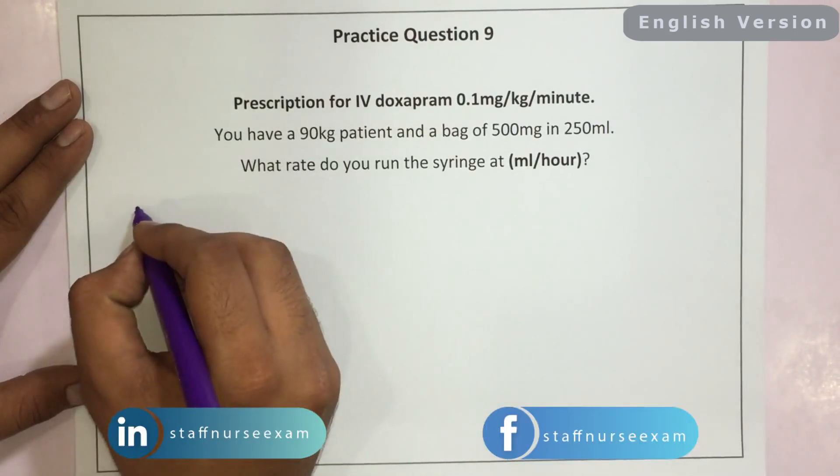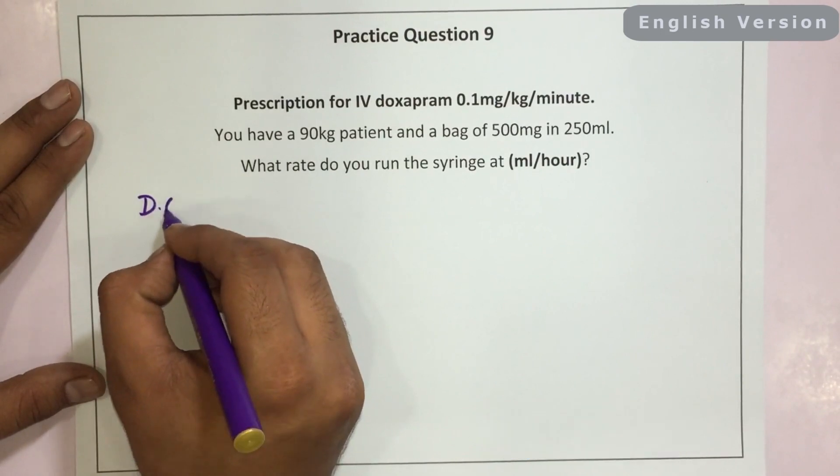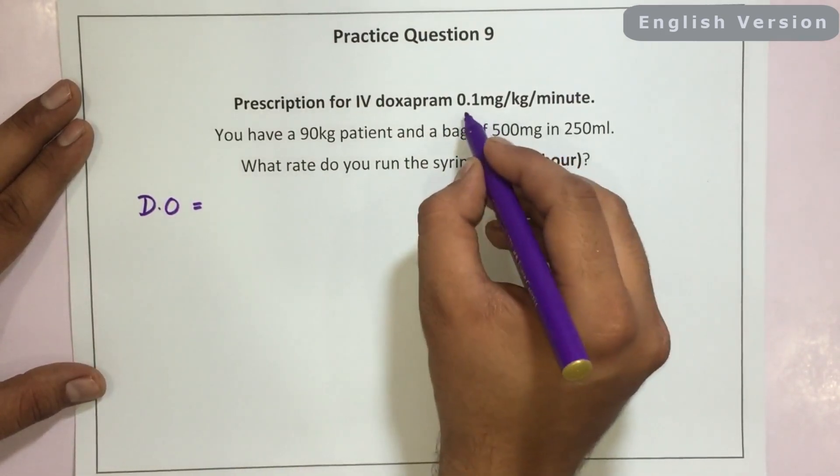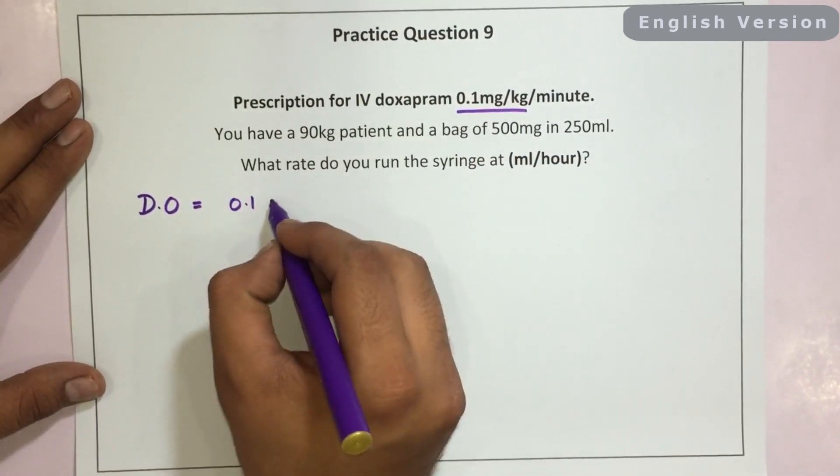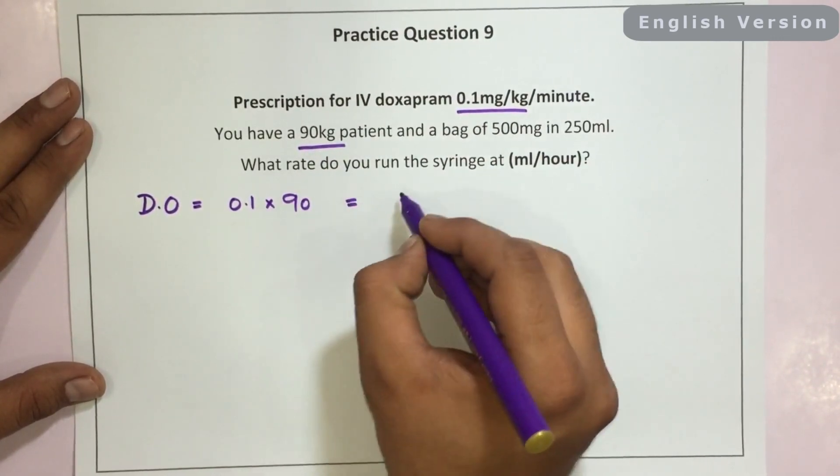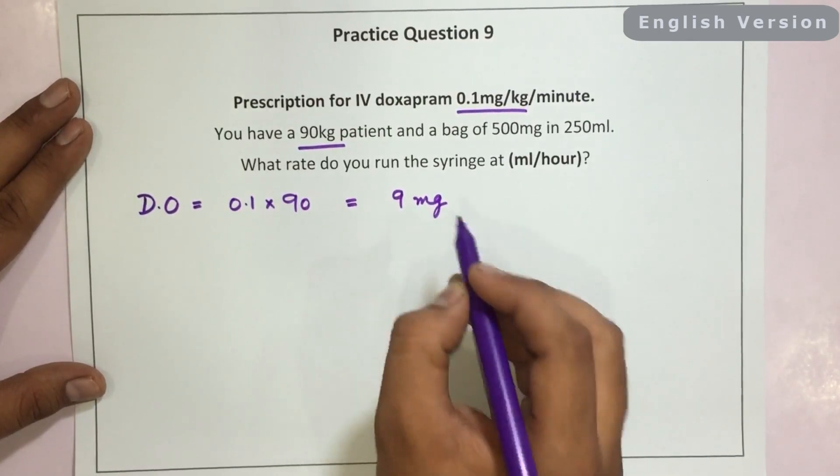It is a very straightforward question. We will go with the steps. Step number one would be to see what is dose ordered. The dose ordered is 0.1 mg per kg and how many kg is a patient? 90 kg. So the dose that comes out to be dose ordered 9 mg.